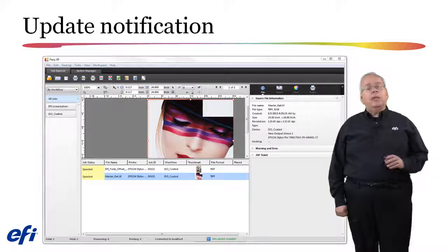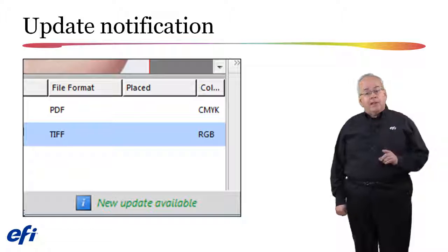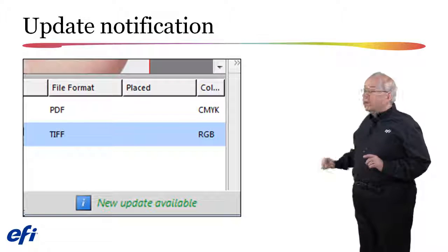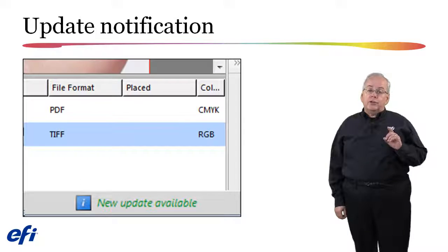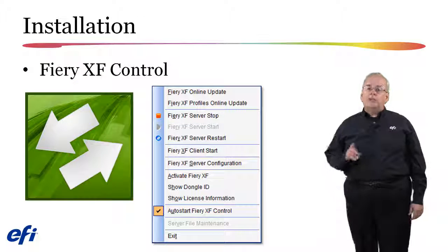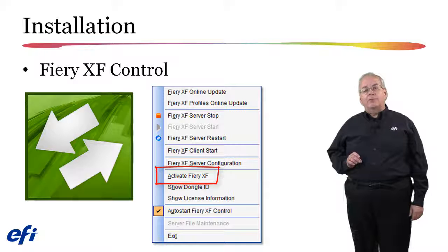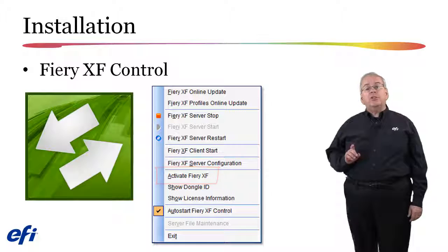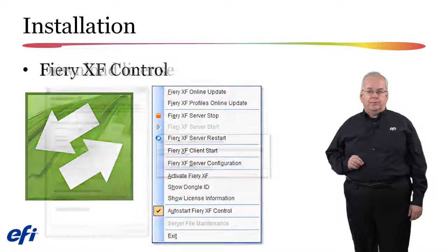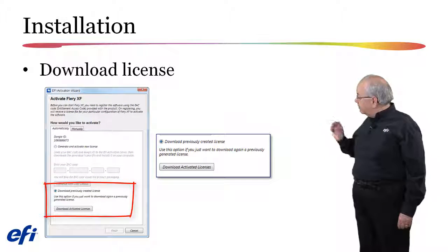The Fiery client will inform you when the upgrade is available online, but this does not necessarily mean that your license is available for download. If your Fiery client shows you that the update is available, you should first download your pre-activated license using FieryXF Control. Once the online update is available and you have your 6.4 license available, use the Activate FieryXF option from the FieryXF Control pop-up menu to install the license on your Fiery server, using the Download Previously Created License option.